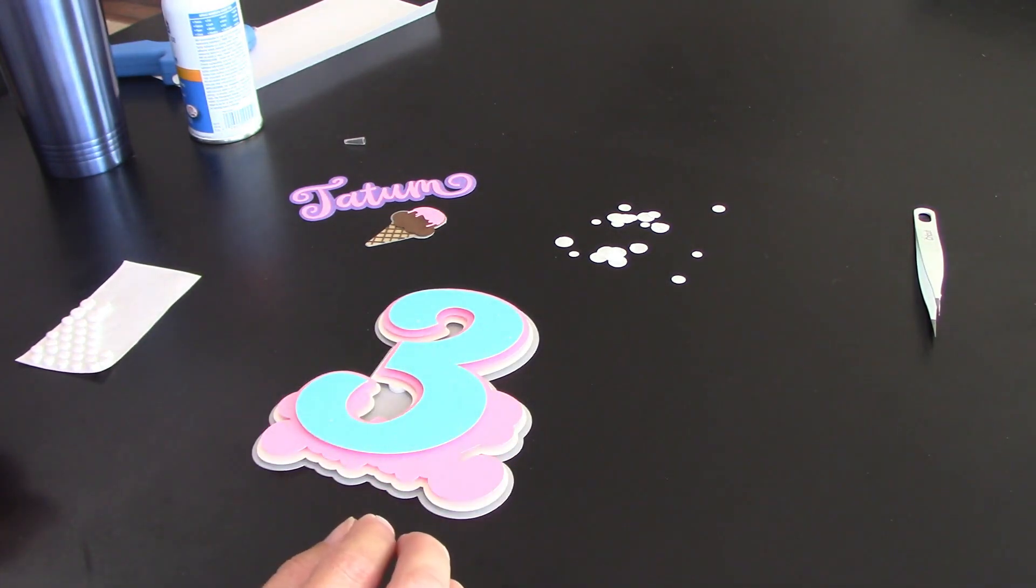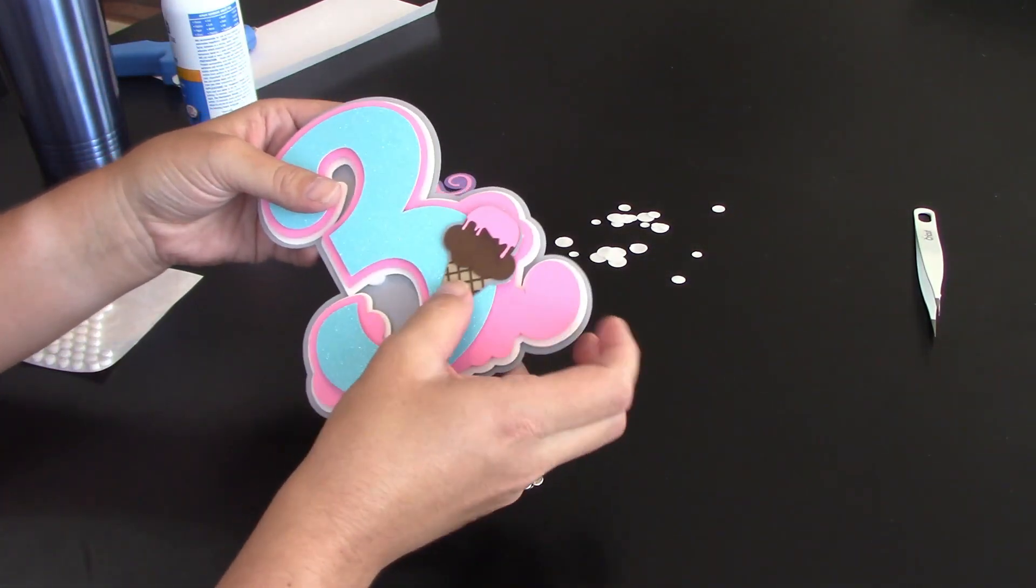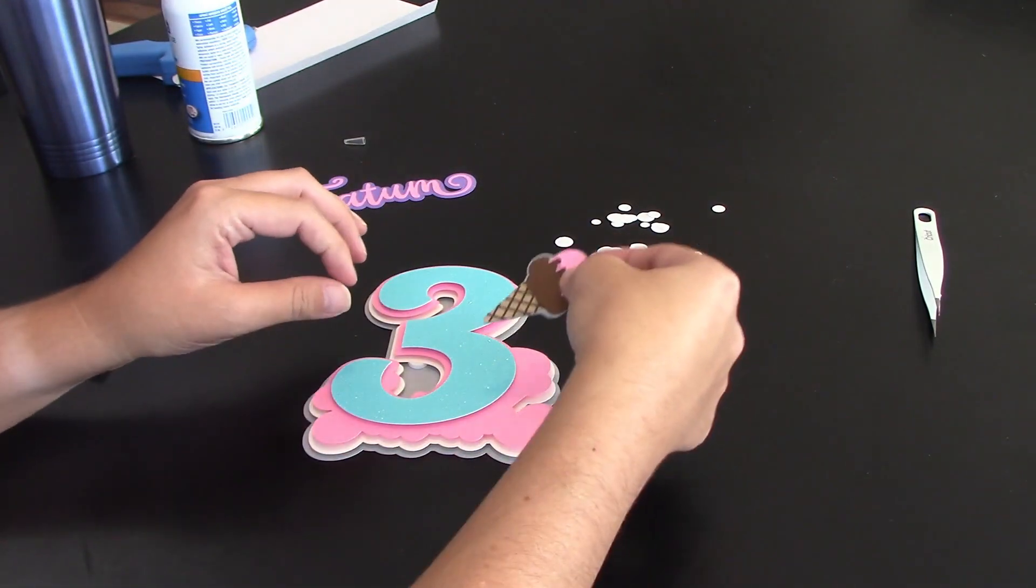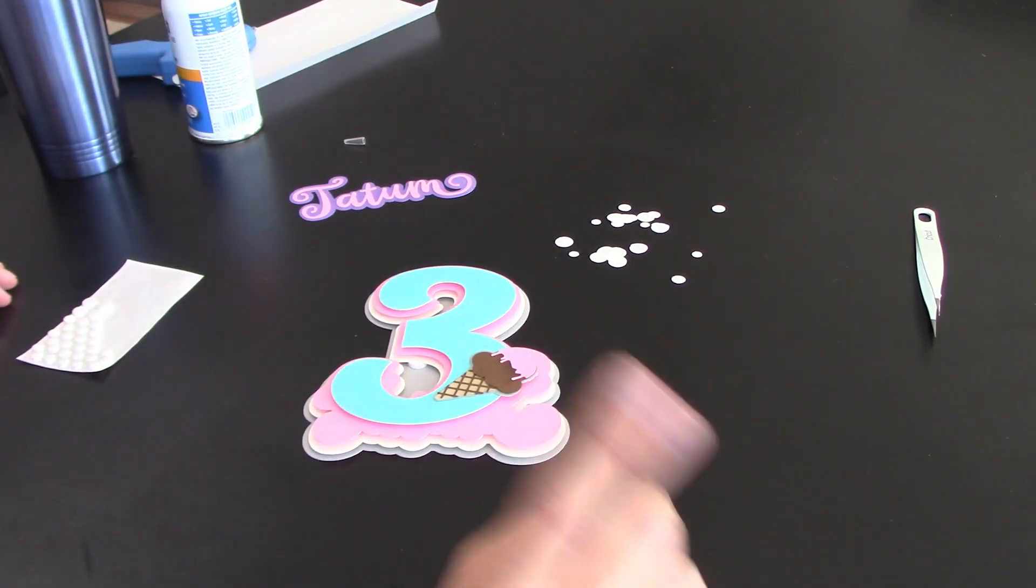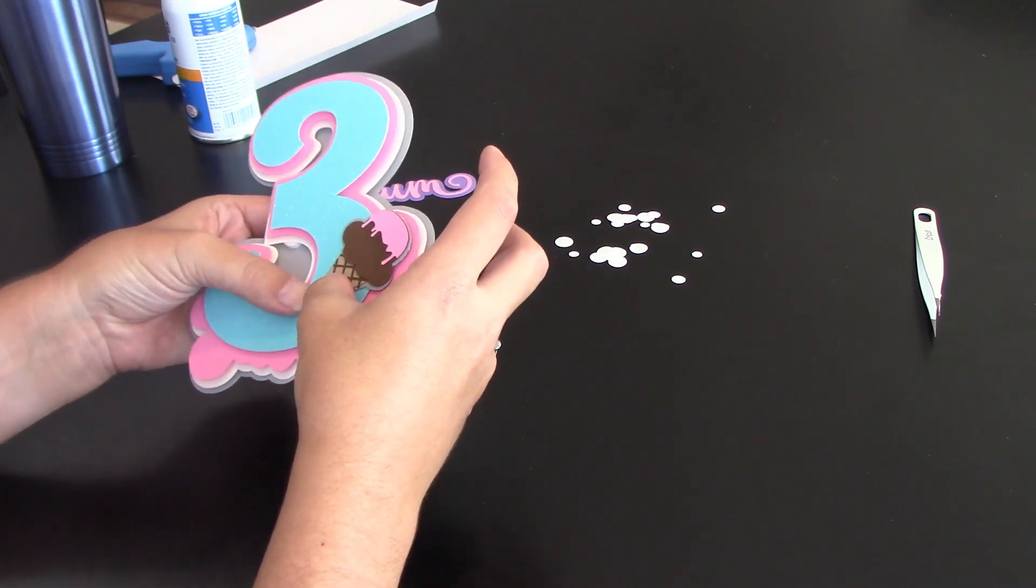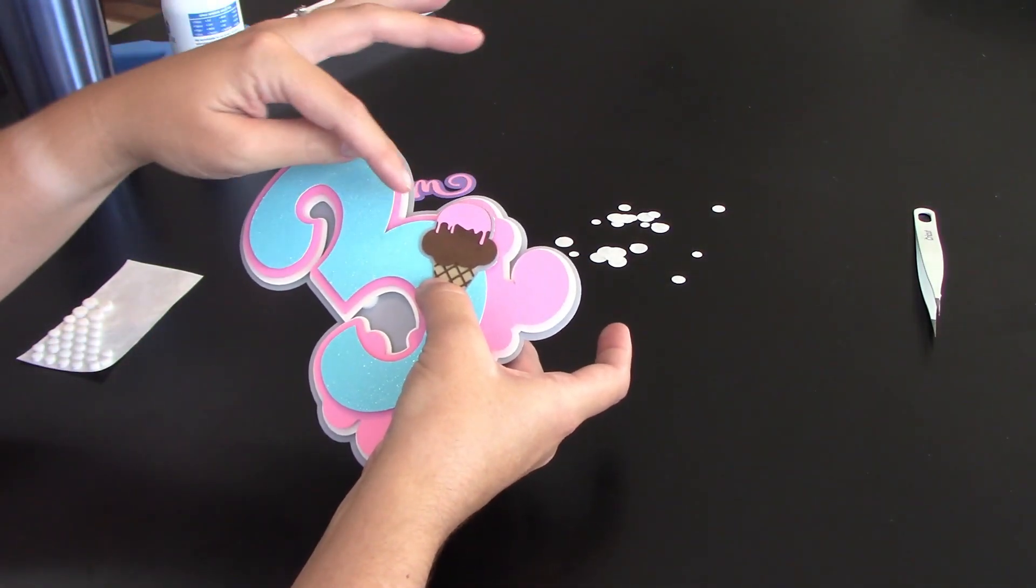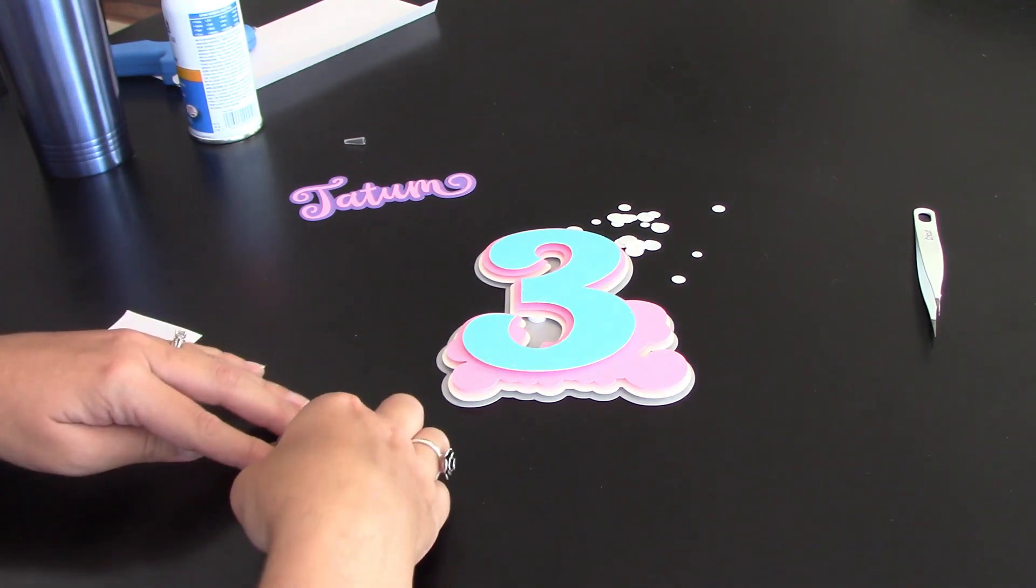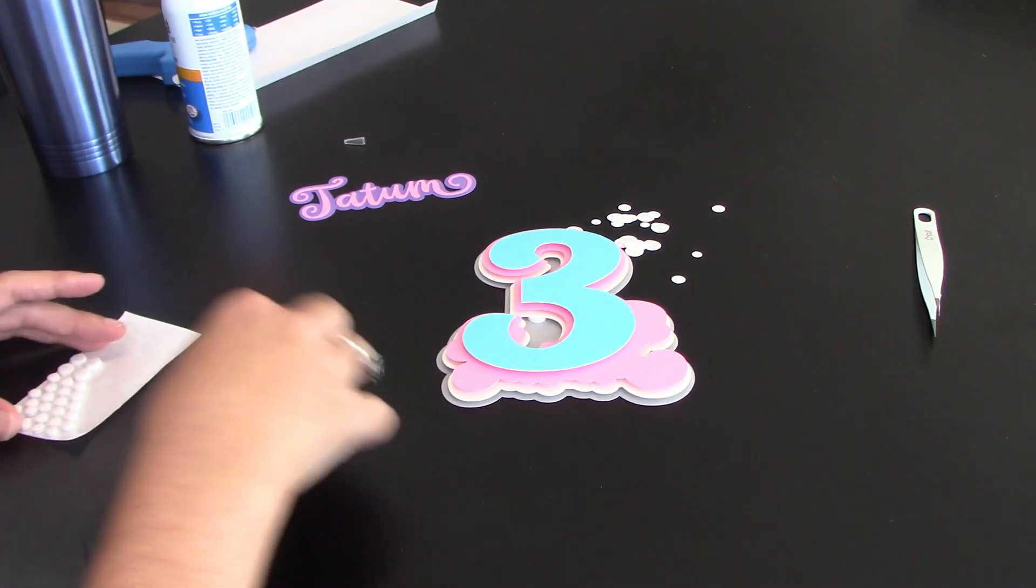Now where you're going to have a little bit of an issue is you are only gluing this to the three. You're not gluing it to the pink layer. So you've got to be real precise with where you put your dots. So I'm getting a good eye on where I can put dots. And I know I cannot put dots above this scoop of ice cream, and I cannot put dots anywhere at the top. I can put dots all over the bottom.